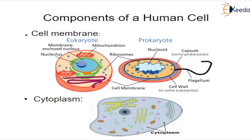Cytoplasm. Within the cell, the cytoplasm is made up of a jelly-like fluid called cytosol and other structures that surround the nucleus. It is the site of protein synthesis and many metabolic events. The cytoplasm contains many enzymes for general metabolism and fibers of the cytoskeletal systems which organize cytoplasmic structure.